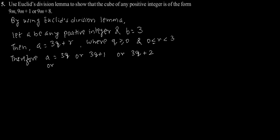This can be written as a³ equals (3q)³, or (3q+1)³, or (3q+2)³. Now let's solve each case one by one, starting with (3q)³.